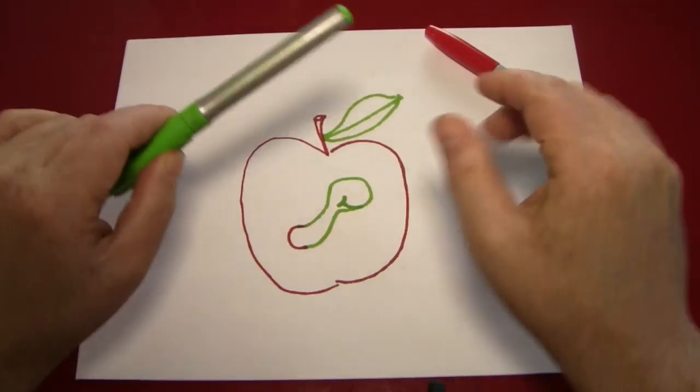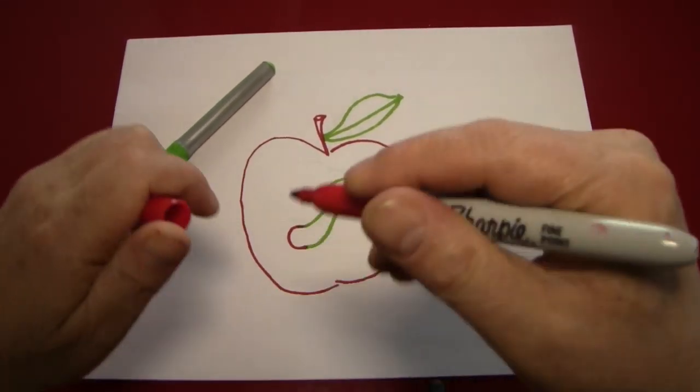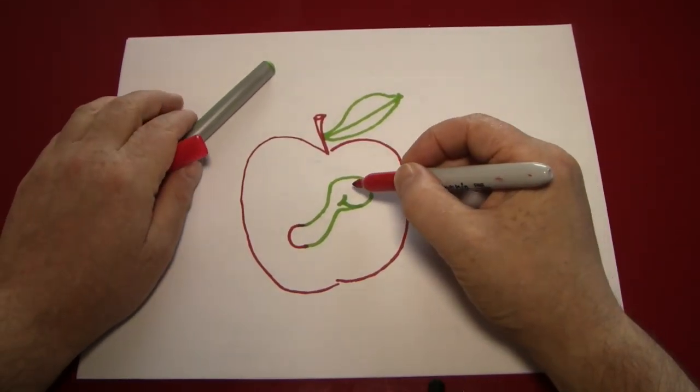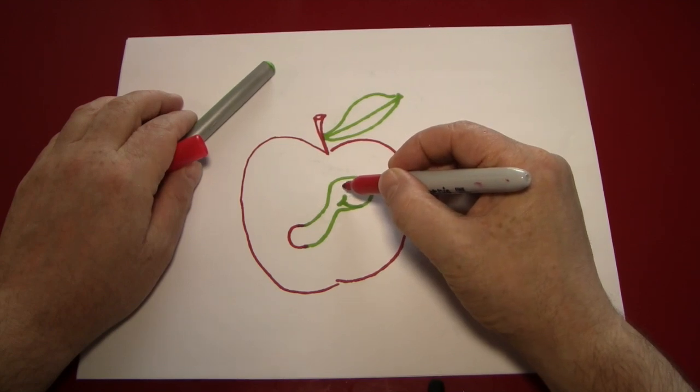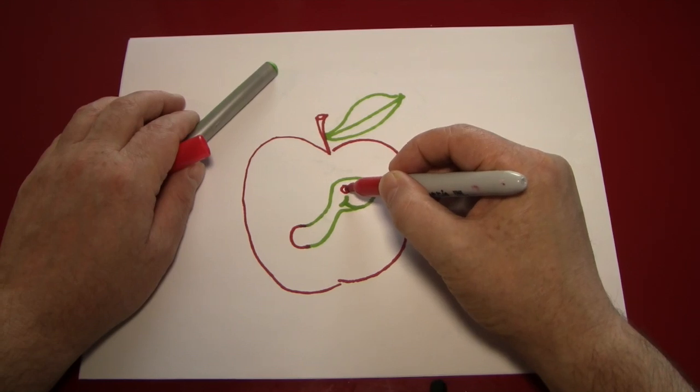If you want to get fancy, why not give him a little red eye? Since we have both colors to play with. A little circle. And a little dot inside the circle.